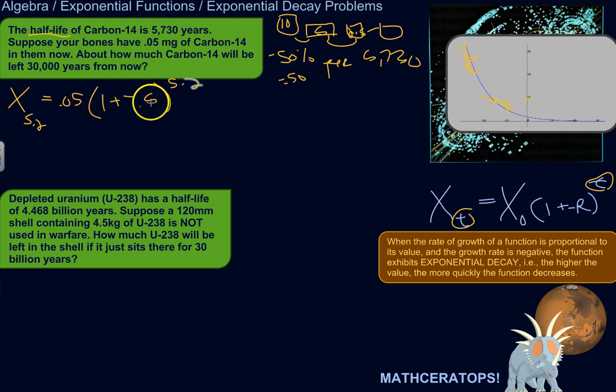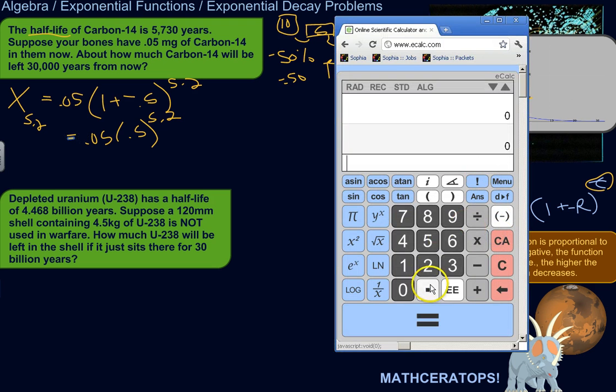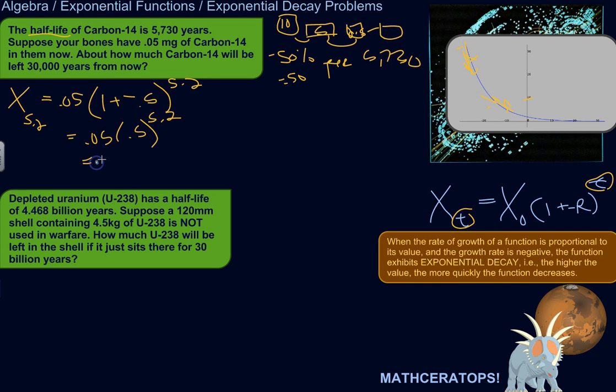So 1 plus negative 0.5 would just be 0.5. So we're going to raise 0.5 to the power of 5.2, and then multiply it by 0.05. Let's grab the old trusty. So we got 0.5, raised to the power of 5.2, and then we're going to multiply it by 0.05. So 0.001, let's round it to 4, 0.0014 milligrams.